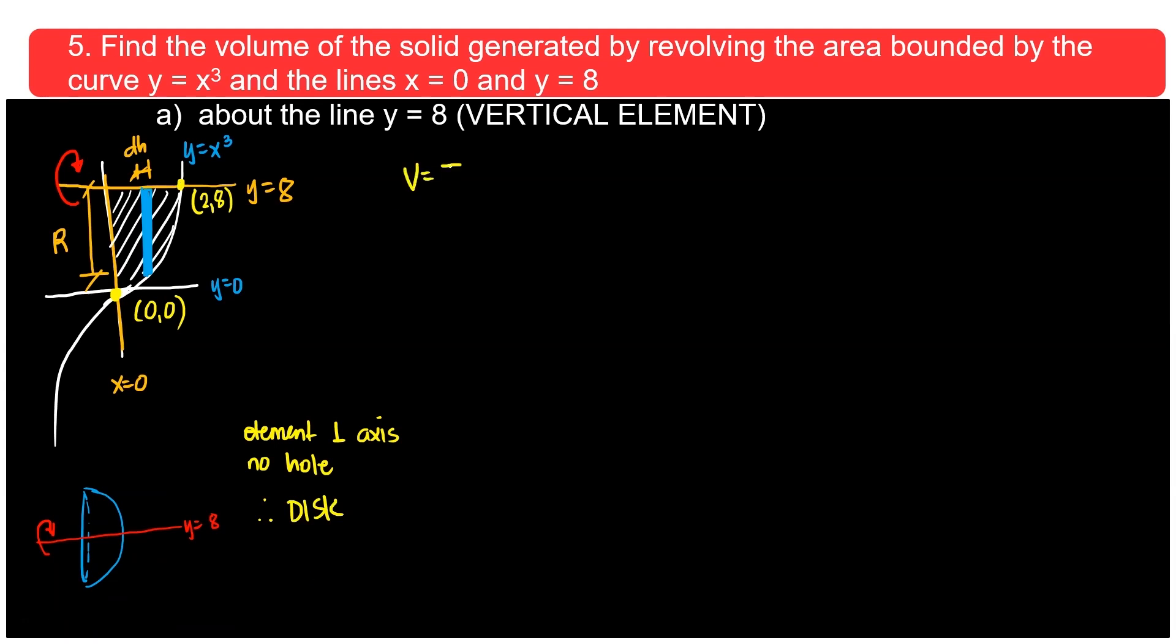So for that, the formula is π from a to b of r squared dh. So all the parts that we need are dh, a and b. For your r, it so happened to be y up is y equals 8. y down is y equals x cubed. Therefore, r is 8 minus x cubed. Right?